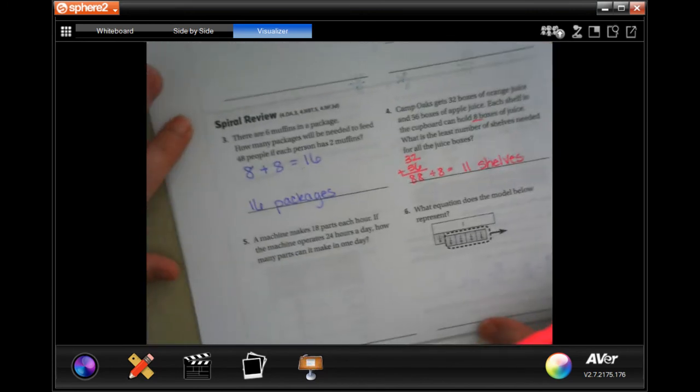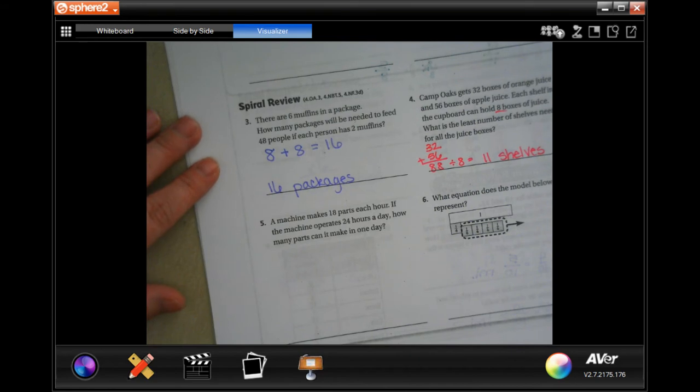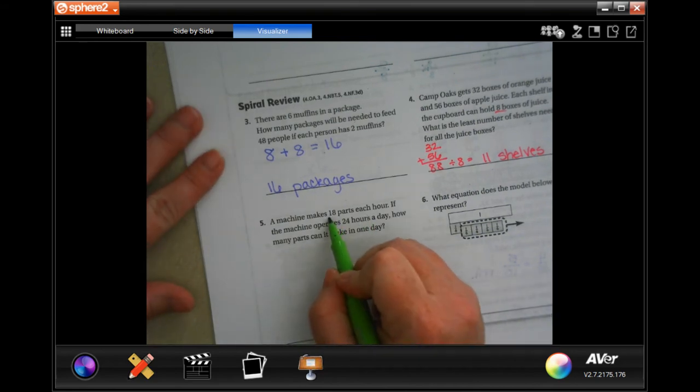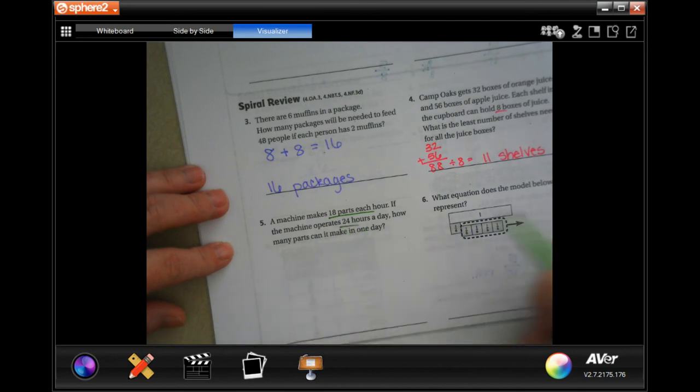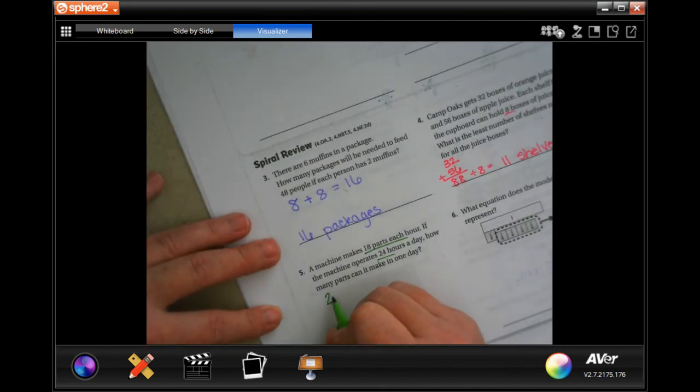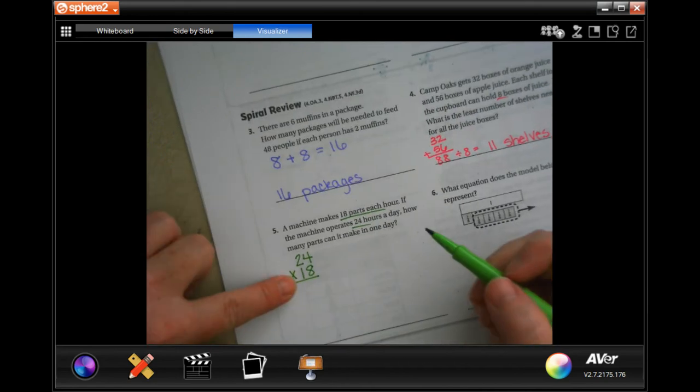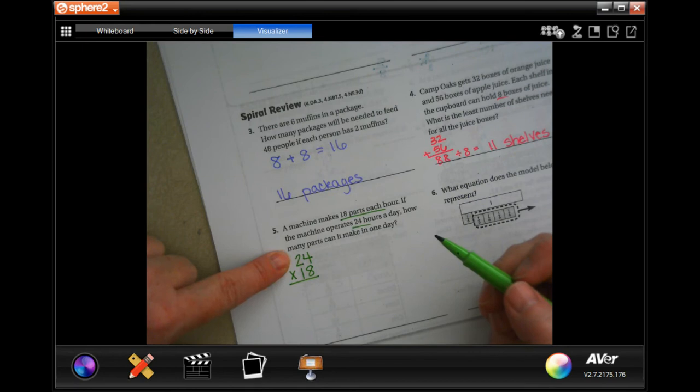A machine makes 18 parts an hour. If the machine operates 24 hours a day, how many parts can it make in one day? So 24 times 18. 18 parts in every hour, there's 24 hours in a day, so let's go.